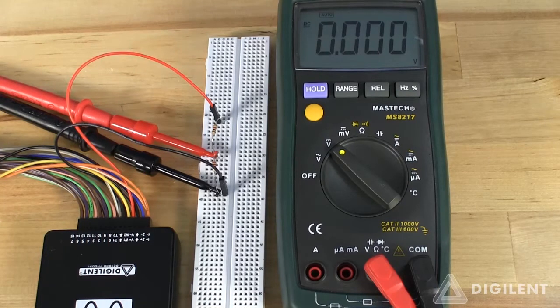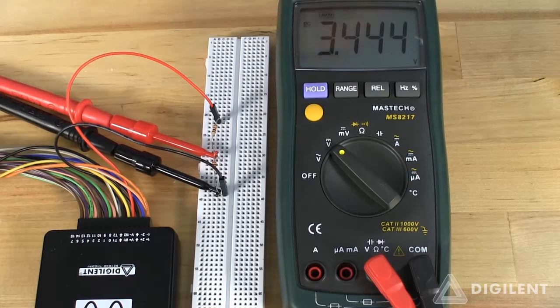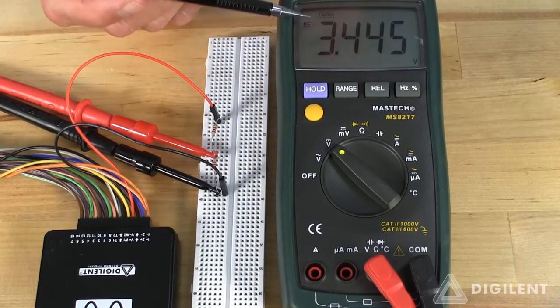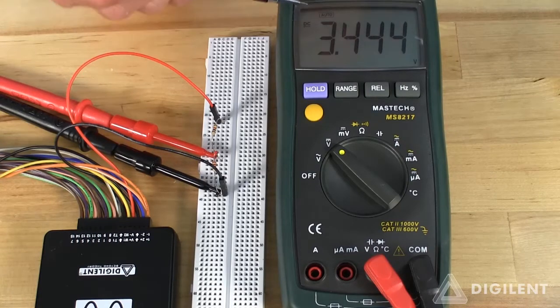Now let's turn on power and our measured voltage is actually 3.445 volts, close enough to our expectations as to make no difference.